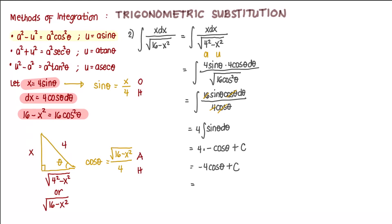Now we substitute, that's negative 4, times square root of 16 minus x squared over 4 plus c. Then we cancel out 4. The final answer is negative square root of 16 minus x squared plus c.